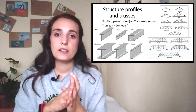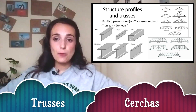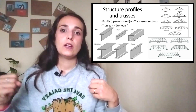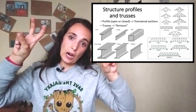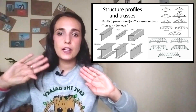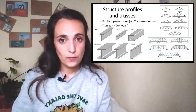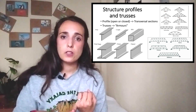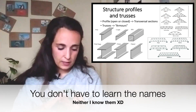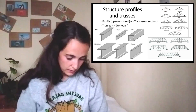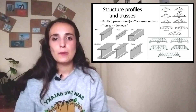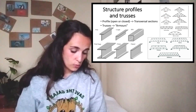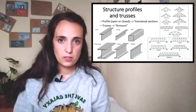We can also have trusses. Trusses are like armors to make a structure stronger. We have roof trusses, like roof armors, and they are also used in bridges. There are different shapes and each shape has a name, like the king post, the fan, the scissor, and the brace. Braces are also used for bridges, and in the case of bridges we also have the bowstring or the Warren, among others. There are lots of different trusses, sections, and profiles.